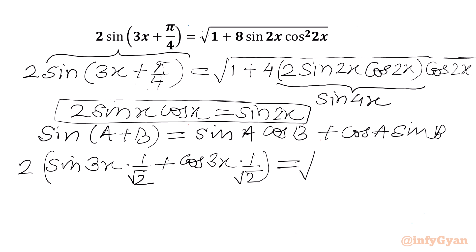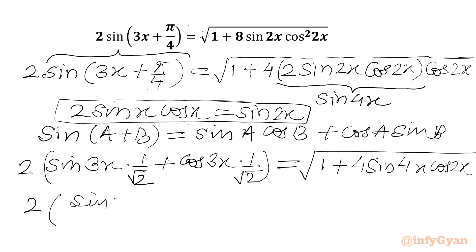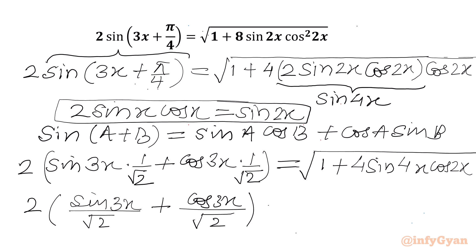The RHS we write as the square root of 1 plus 4 times sin 4x times cos 2x. So our full equation is: 2[sin 3x/√2 + cos 3x/√2] equals the square root of (1 + 4 sin 4x cos 2x).